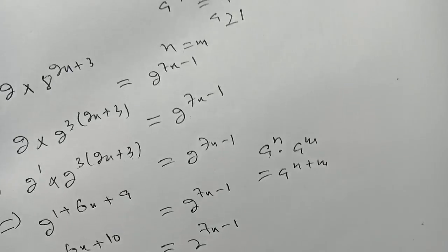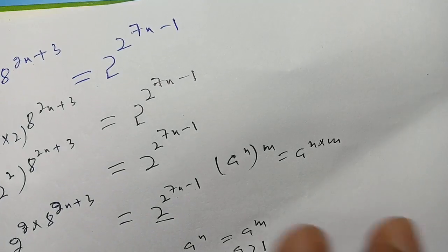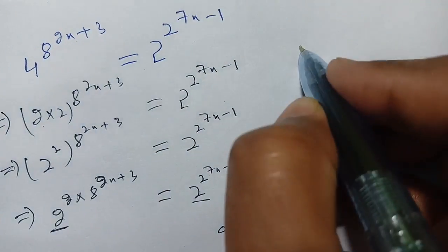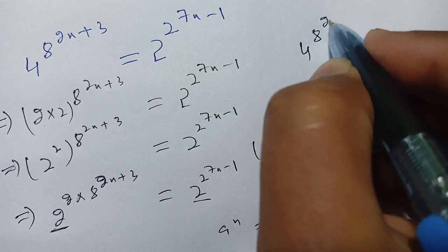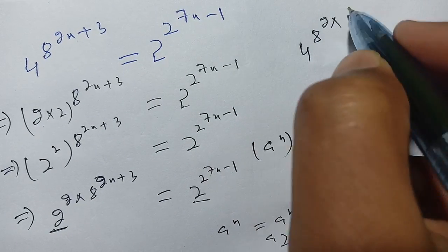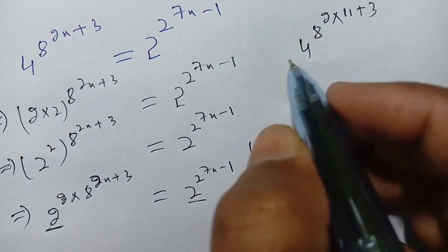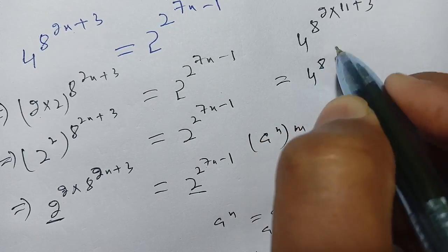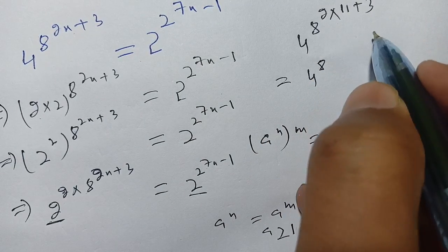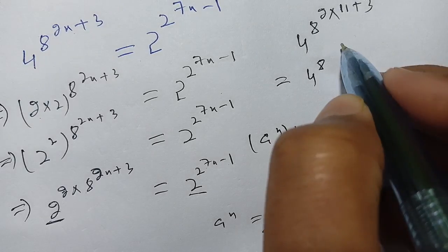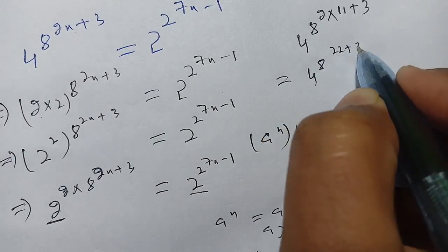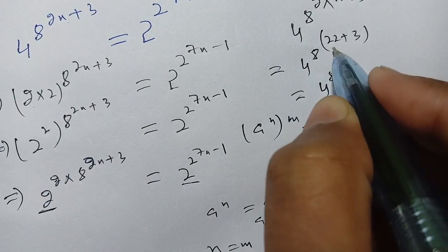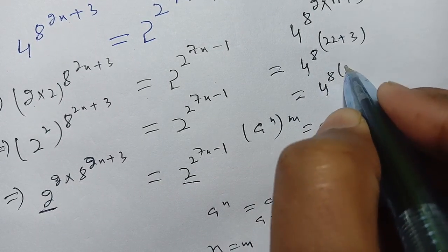Let us check whether x = 11 is our solution or not. We take the left hand side: 4^(8^(2×11+3)) = 4^(8^(22+3)) = 4^(8^25). We write 4 as 2², so it becomes (2²)^(8^25) = 2^(2 × 8^25).